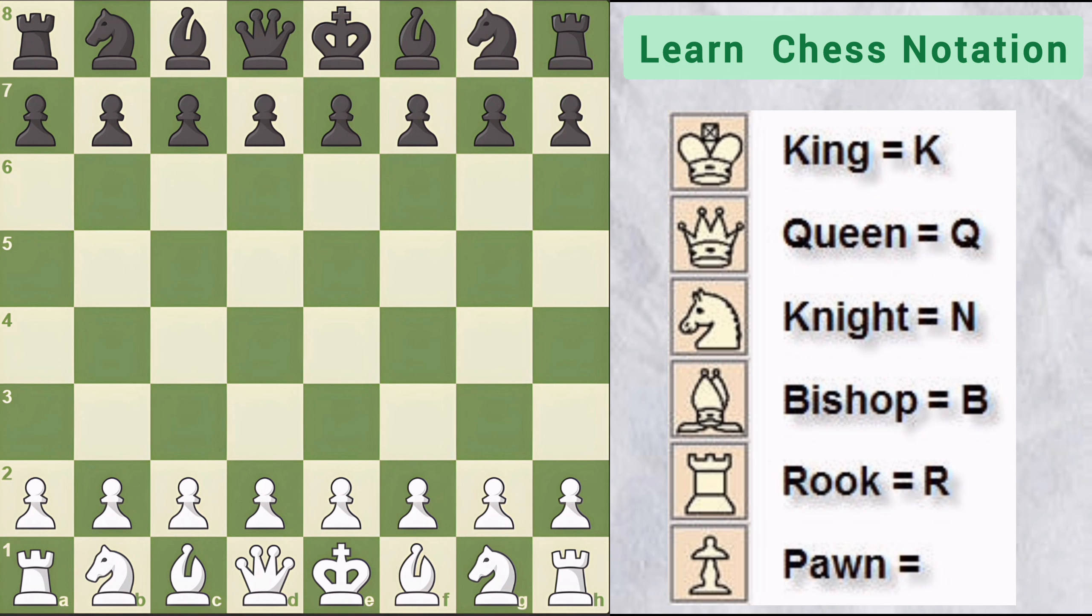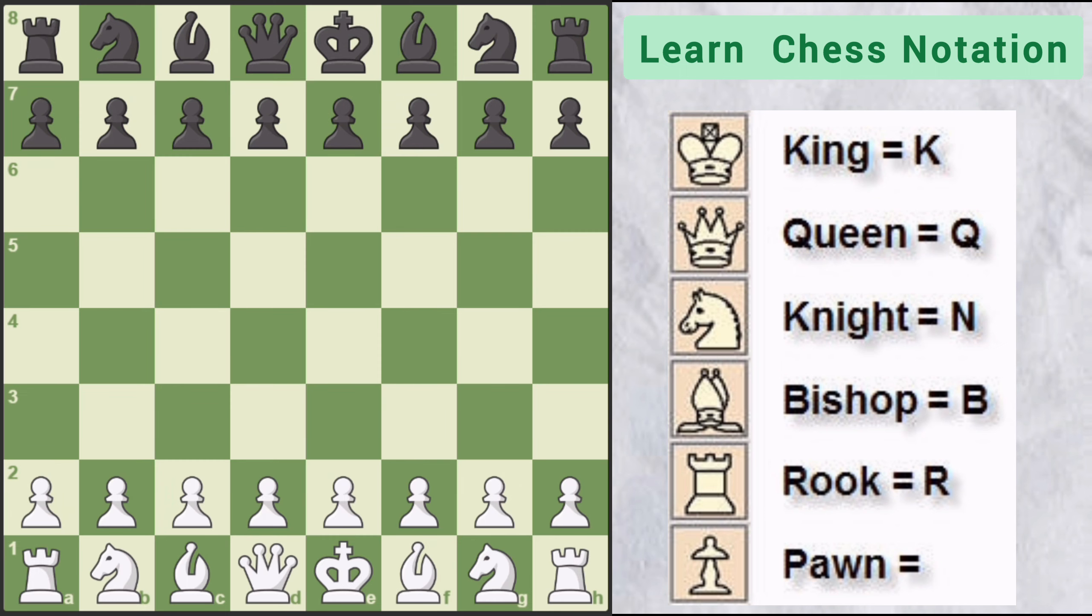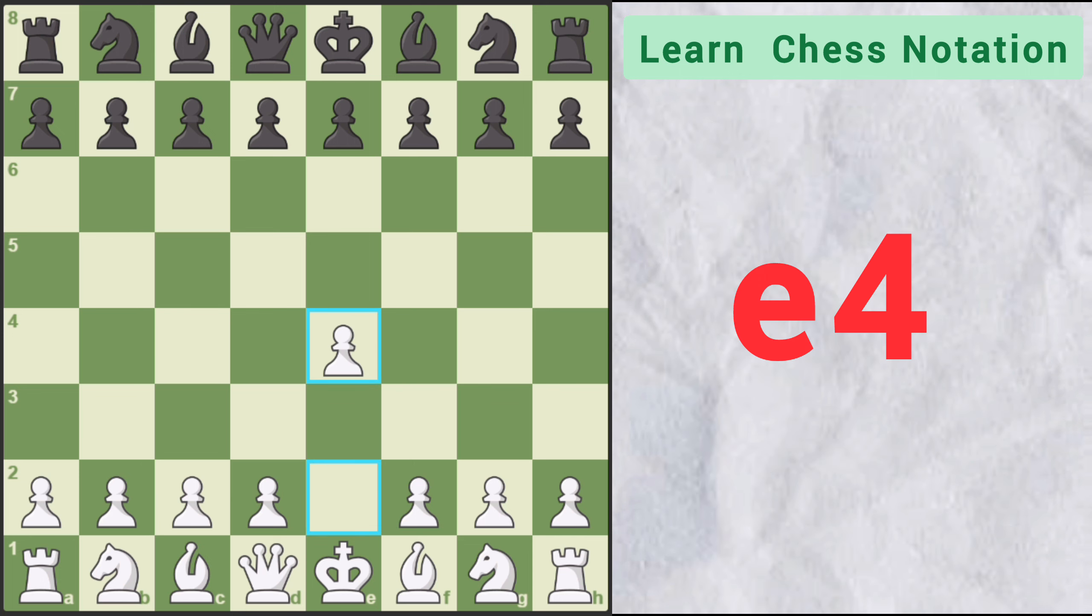And for Pawn, we only use the name of the square where it moved. Which means if I move my Pawn from E2 to E4, then I will write E4 in the score sheet.